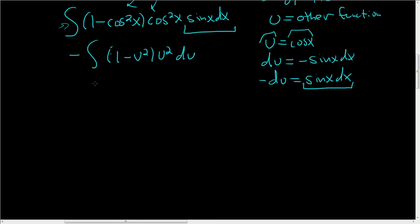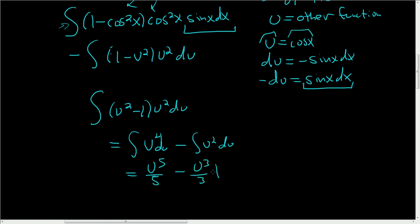Let's finish. Distributing the negative sign, we get (u² - 1)u² du. Breaking this up gives u⁴ - u², and don't forget the du's. When we integrate this, we get u⁵/5 - u³/3 + C.